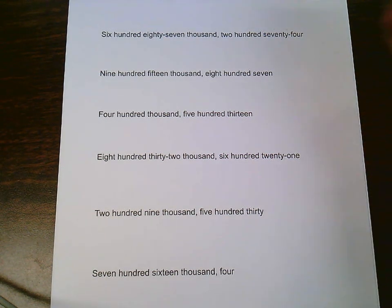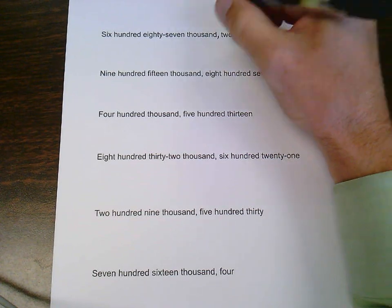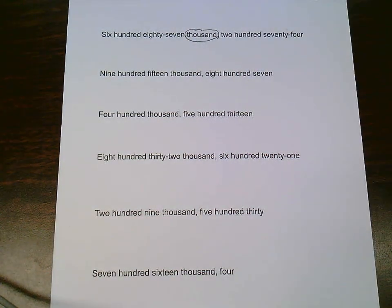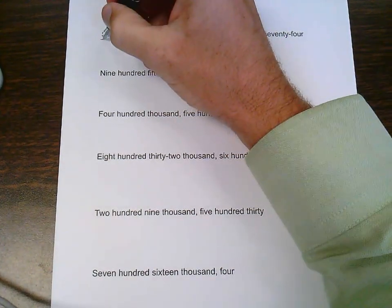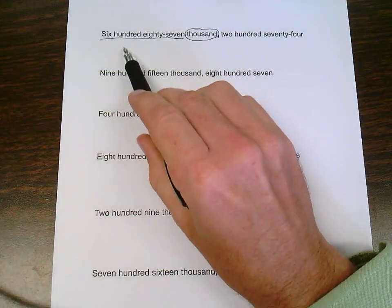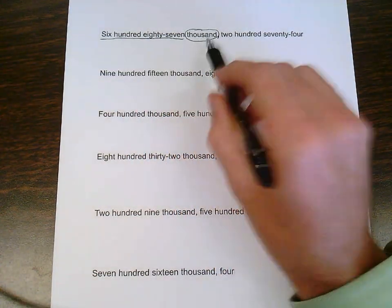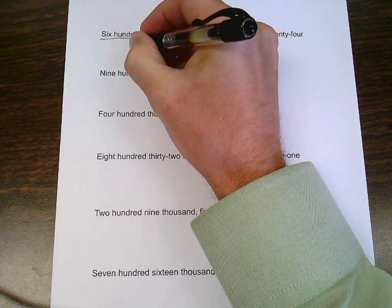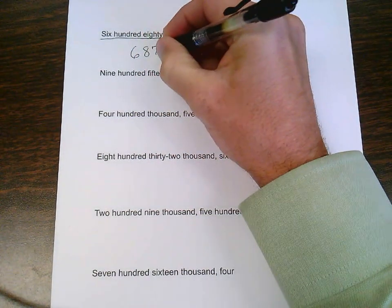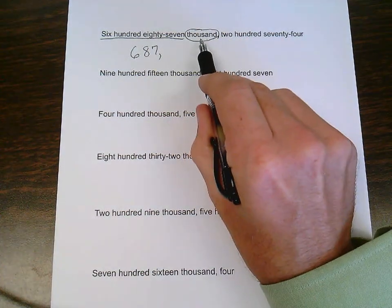The first thing I want to look at is the comma and the word in front of the comma. That word in front of the comma always tells me what period the words in front of it are going to be located. So this 687 is going to be located in the thousand period. So 687 and I put a comma there and that means that it's going to be in the thousand period.